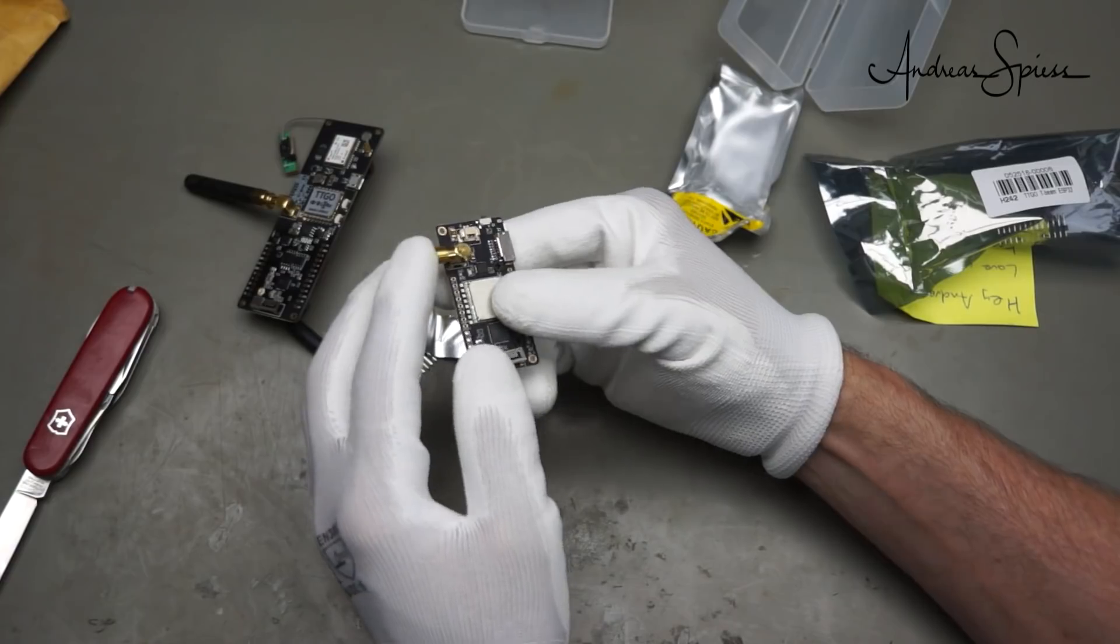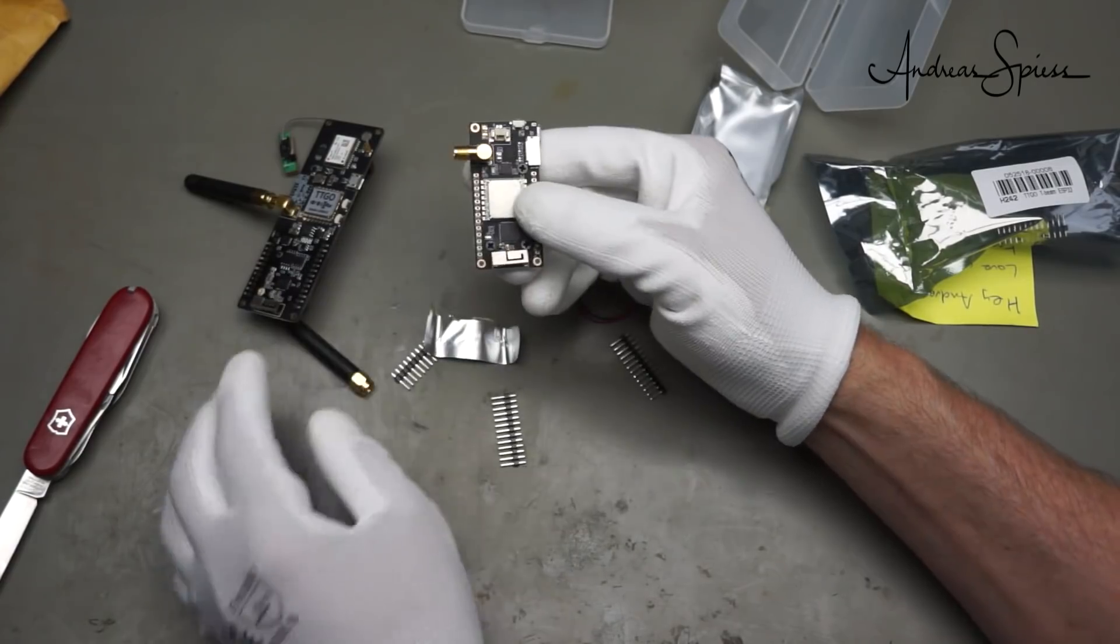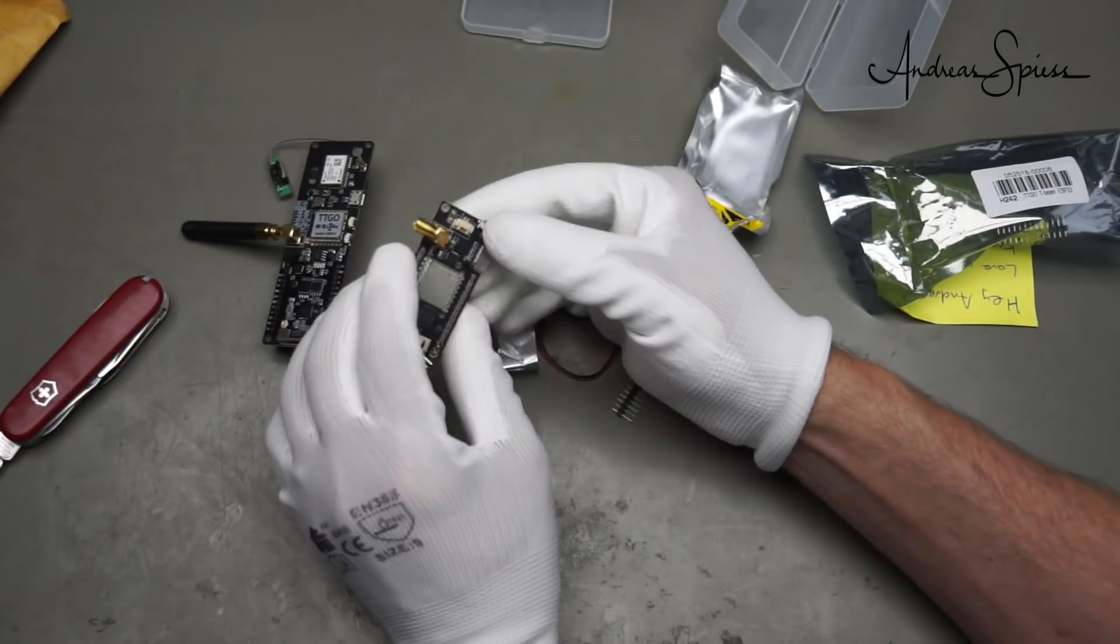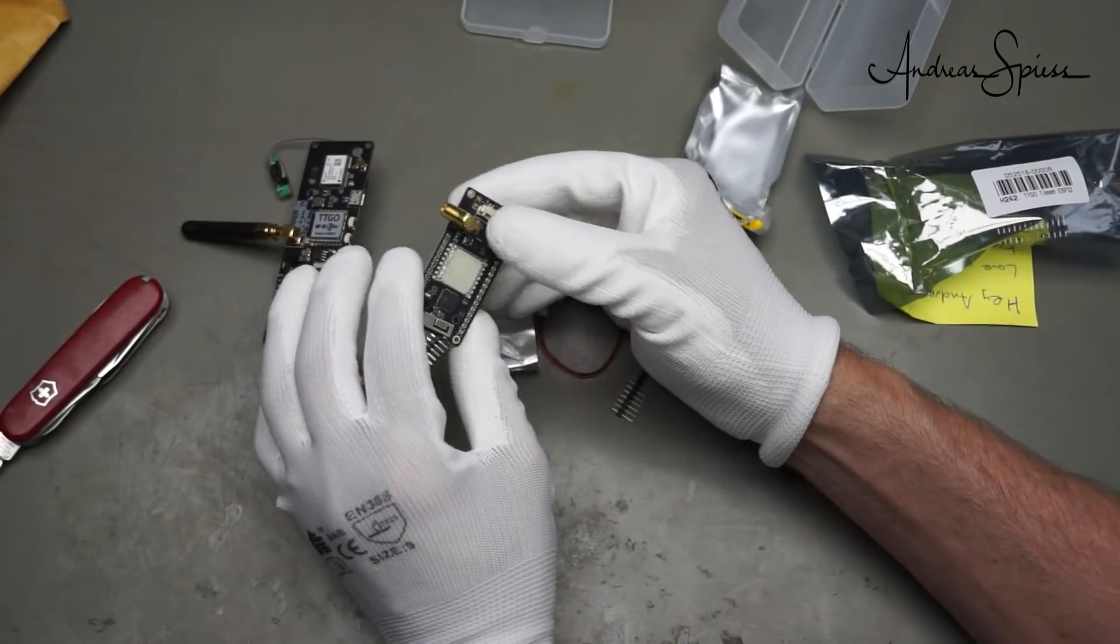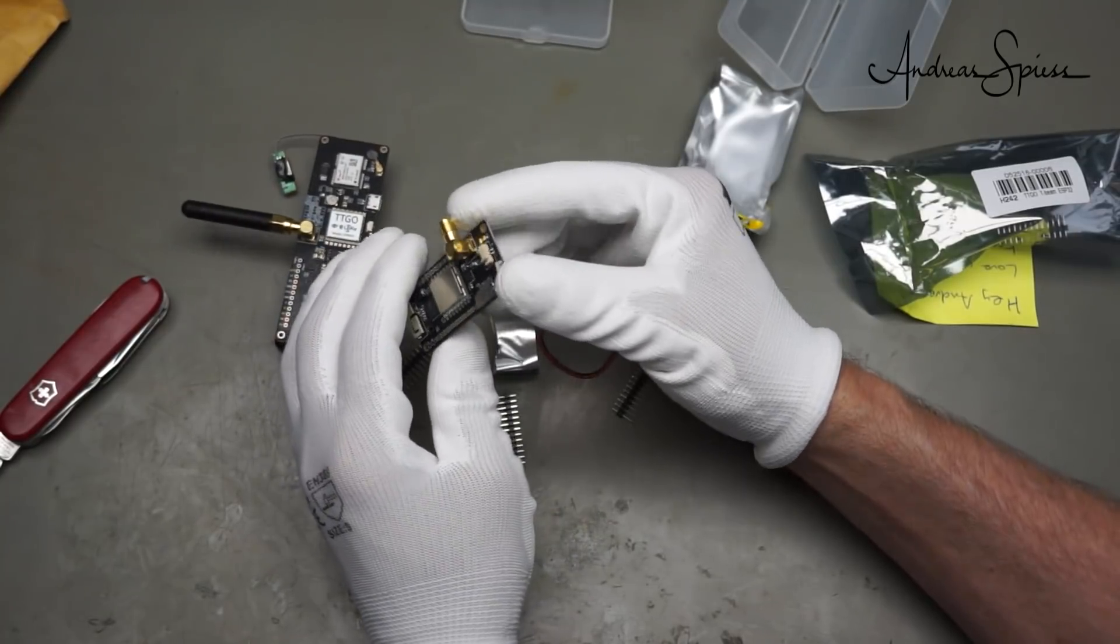It has a LoRa module here. But if I remember right, this SMA connector is different. It is the same as here. But the 2.0 did not have, if I remember right, it did not have this one here.